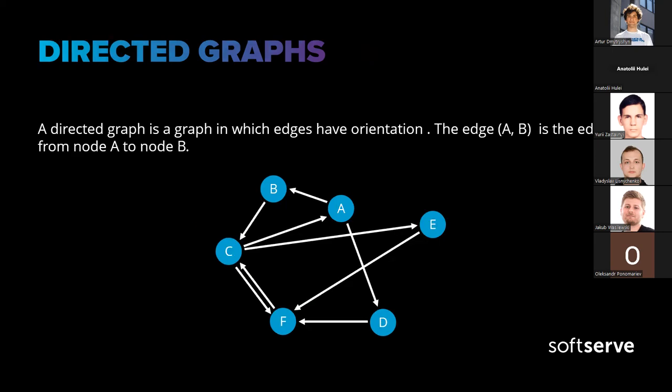In contrast to undirected graphs, there are also directed graphs. A directed graph is a graph in which edges have orientation, so edge AB is the edge from node A to node B. For example, nodes could be cities and edges represent roads — roads could be one-way or two-way. For example, from C to F we have a two-way road.